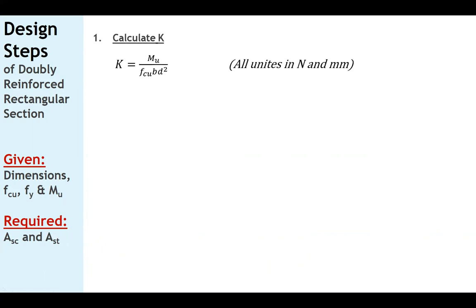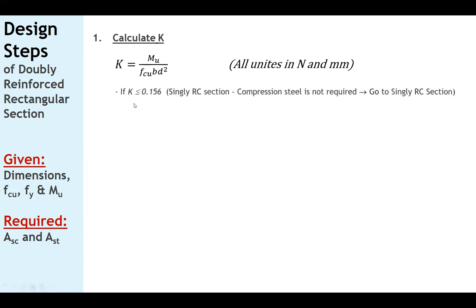Step 1: Calculate K = Mu / (Fcu·b·d²). Make sure all units are in Newtons and millimeters — if the moment is in kN·m, multiply by 10⁶. If K ≤ 0.156, the section is singly reinforced — no compression steel is required, and you design it as a singly reinforced section. If K > 0.156, the section is doubly reinforced and compression steel is required; proceed to step 2.